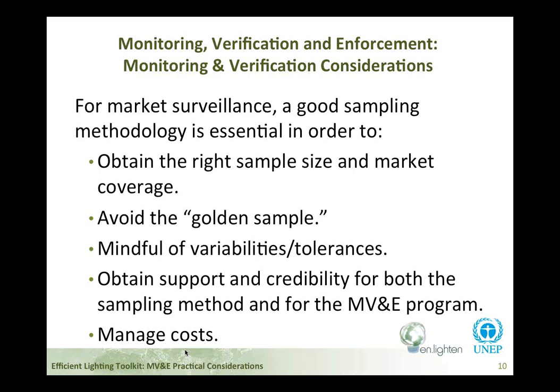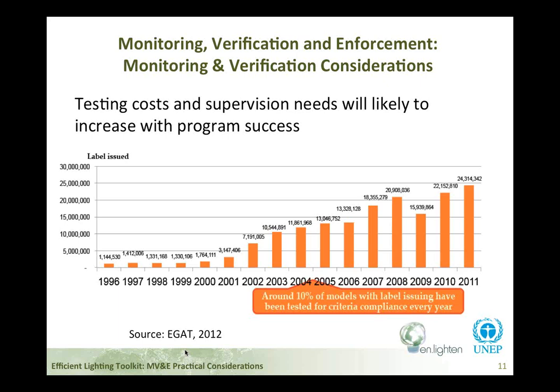Here's another interesting slide showing the number of tests and models tested by the EGAT program in Thailand — the Electricity Generating Authority of Thailand. You can see the cost implications here: they have issued 30 million labels and try to test or review at least 10 percent of the market every year, which is a significant amount of cost.